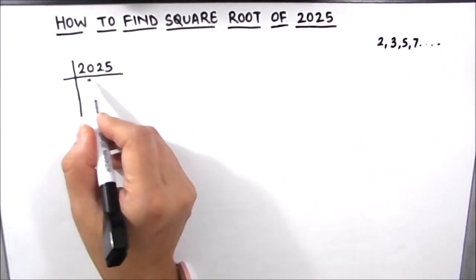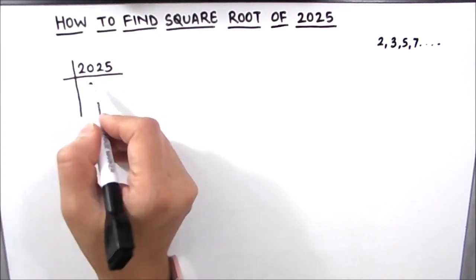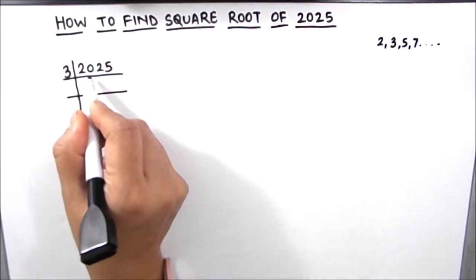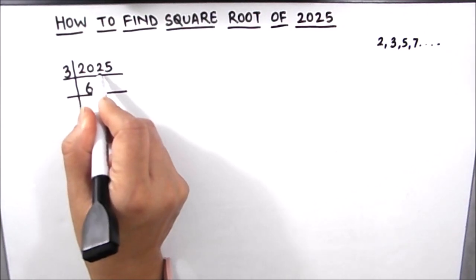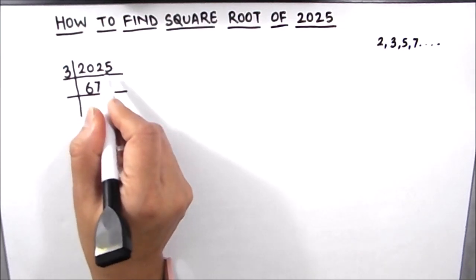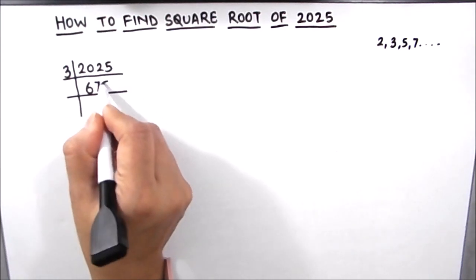As 2025 is an odd number, let's use 3 to divide that number. 3 times 6 is 18, then 2 will be remainder, then we'll drop down 2 so this becomes 22. 3 times 7 is 21, 1 will be remainder, then we'll drop down 5, that becomes 15, and 3 times 5 is 15.